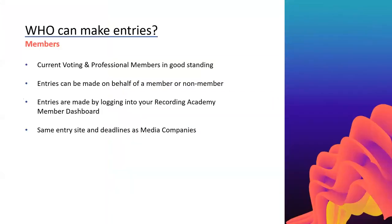Who can make entries? We have two different ways. First, members: all current voting and professional members in good standing can access the entry site. Entries can be made on behalf of a member or a non-member — meaning as a member you can submit anything that is eligible, even for artists, producers, or engineers who are not themselves members. As a member you can submit really anything that is eligible. These entries are made by logging into your Academy account and clicking the OEP button on your member dashboard.